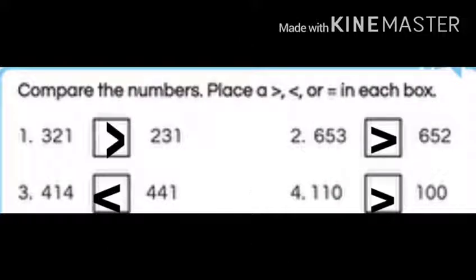Compare the numbers, place a greater and a smaller sign in each box. Here the greater is like open mouth and the smaller is the mouth where it is closed. So the number is 321, 231. So greater is 321. We will put a greater sign.